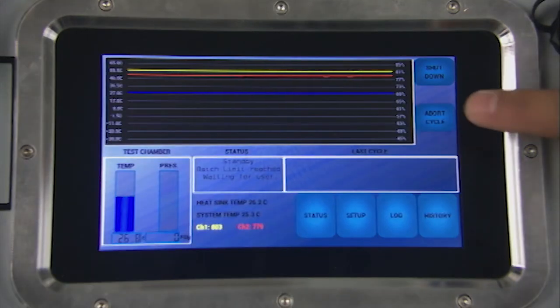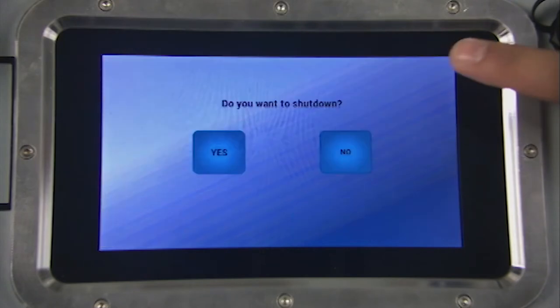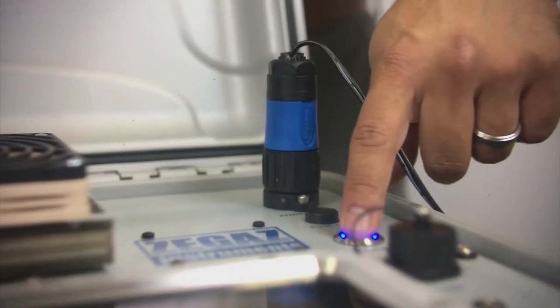The abort cycle button is used to cancel a test cycle currently in progress. The shutdown button is used for powering down the analyzer. Once pressed, the system will prompt. Press yes to confirm and no to cancel. After the touch screen goes blank, you may power down the unit using the illuminated power switch.